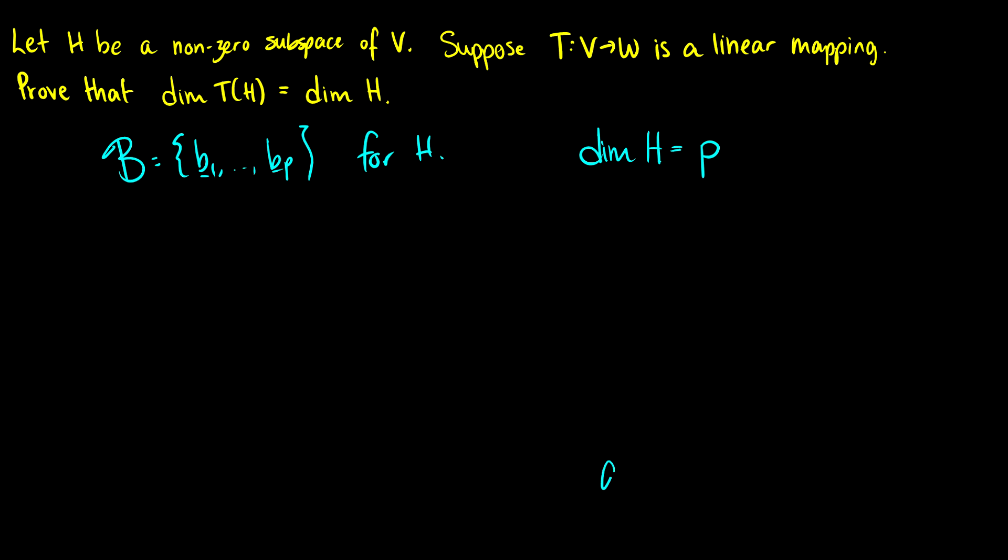Now we need to show that the dimension of the transformation of H is also going to be equal to p. So we should start by putting the transformation on all the vectors here. We're going to get a set that contains T(v₁) all the way up through T(vₚ). Now I believe in one of the previous videos I've shown that this is going to span T(H), or the transformation on H.